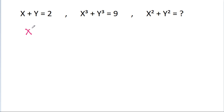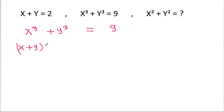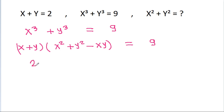So we have x cube plus y cube is equal to 9. And x cube plus y cube is equal to x plus y times x square plus y square minus xy, that is equal to 9. And x plus y is 2 times — suppose x square plus y square is k — minus xy, that is 9.